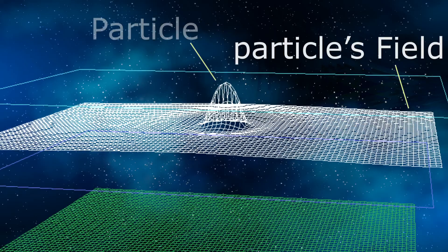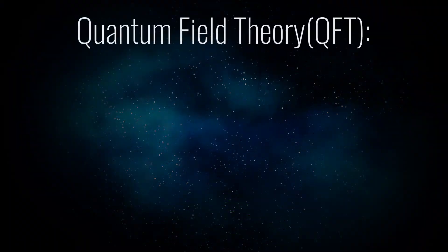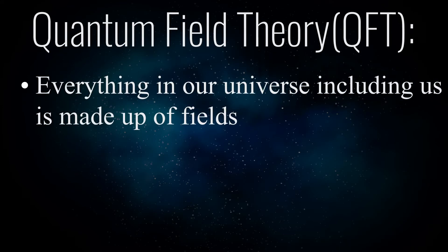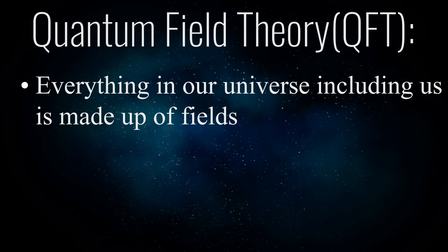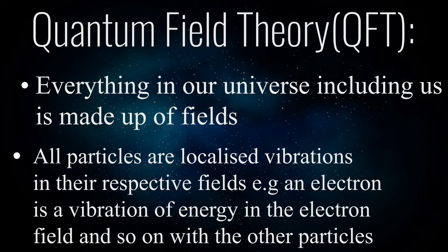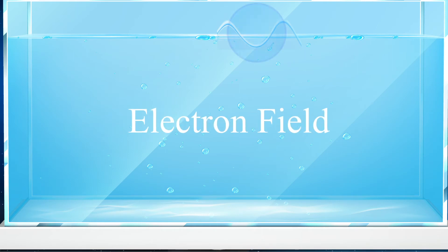What have all these fields and waves got to do with our particles and our universe? Well, according to QFT, a particle is nothing but a localized disturbance or vibration in its respective field. To summarize, QFT states that our universe is made up of fields that exist all around us to the edges of the universe, and all particles such as quarks, electrons, etc. are localized vibrations in their respective fields, which represent a packet of energy. To understand this, imagine the water as an electron field — that would make the wave an electron. The wave represents a packet of energy that causes a disturbance in the water.